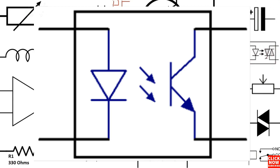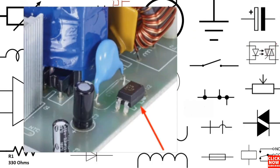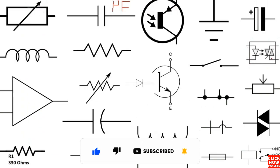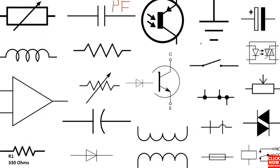We can use a phototransistor in optocouplers. This is the opto-isolator image. Basically, optocouplers always connect between the primary stage and the secondary stage in a switch mode power supply.